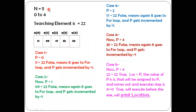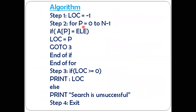Here n equals five, meaning indices zero to four. The searching element is 22 — we want to find whether 22 is present and identify its position. We have stored five elements: 11 at a[0], 9 at a[1], 17 at a[2], 35 at a[3], and 22 at a[4]. All these elements are stored in consecutive memory locations.